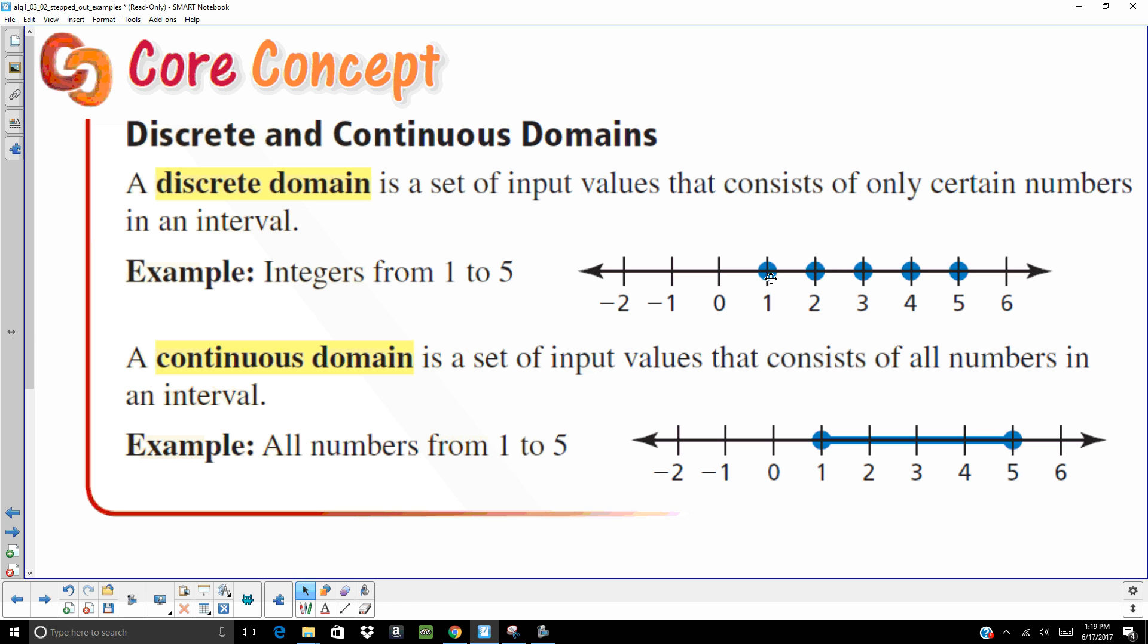If you notice here, we have individual points on the number line. So that means only one, only two, only three, only four, only five are the integers that are part of this domain. On the bottom one, it's continuous. Our domain includes 1.1, 1.11, 1.111. There's an infinite number of points from one to five.